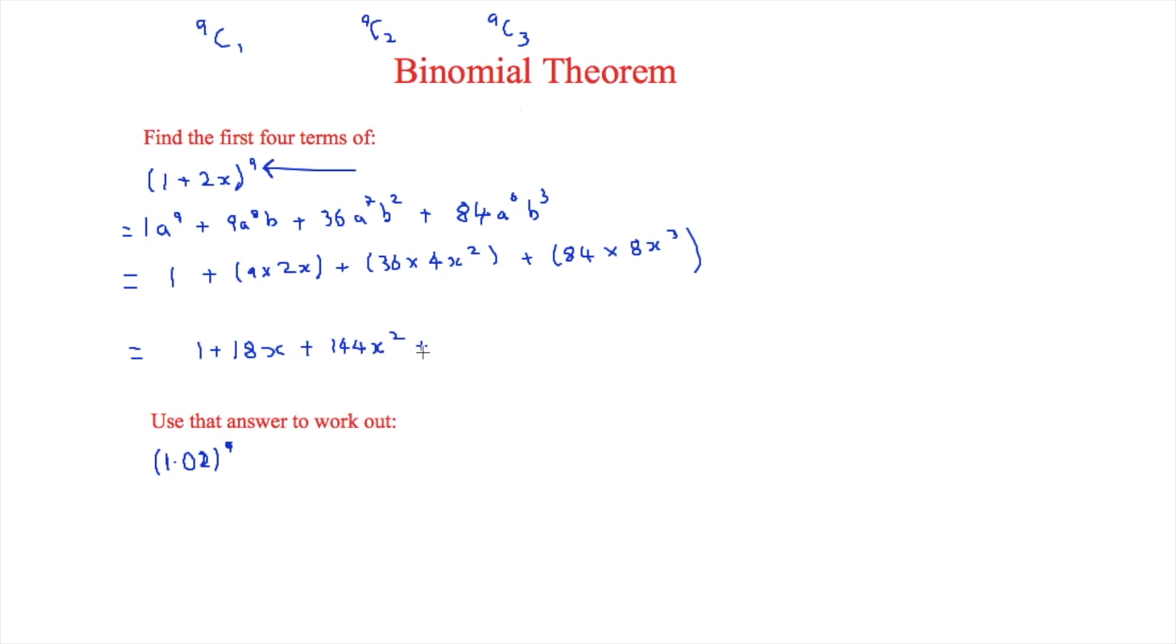Then we're just going to simplify this to get our final answer of 1 plus 18x plus 144x squared plus 672x cubed. And that is our final answer for that as it only requires the first four terms.